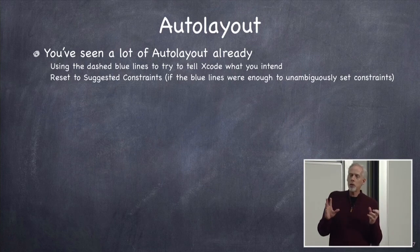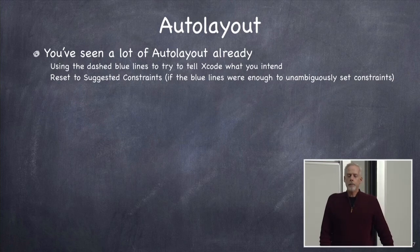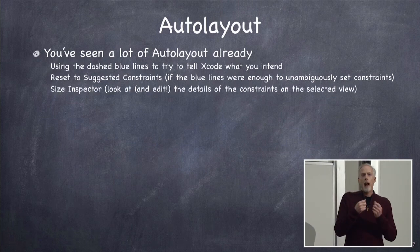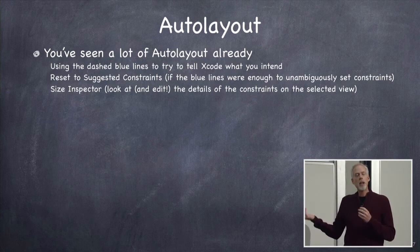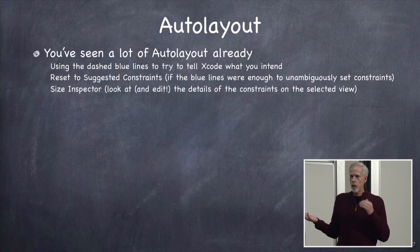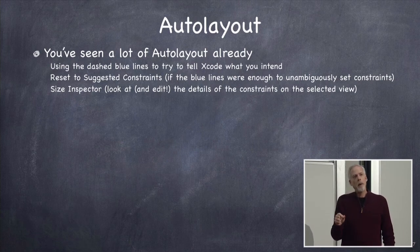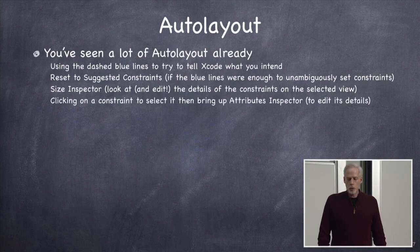You know that reset to suggested constraints doesn't always do what you want — it really only works if those blue lines unambiguously show what you wanted. But after you do something, especially after reset to suggested constraints, you can go to the size inspector, click on any of the views in your UI, and look at the constraints. It shows them, you can hover over them with the mouse, it will highlight them on screen. So that's a good tool to know what's going on.